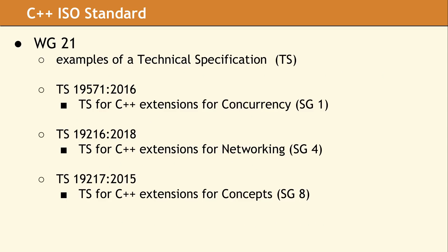Listed here are a few of the technical specification documents Working Group 21 has produced. The first part of the TS number is a serial number, and the second part indicates when the TS was originally published. There can be multiple TS documents produced by a single study group. For example, SG-1 produced TS documents for Concurrency, Parallelism, and Coroutines. The Concurrency TS is expected to be merged into C++20.